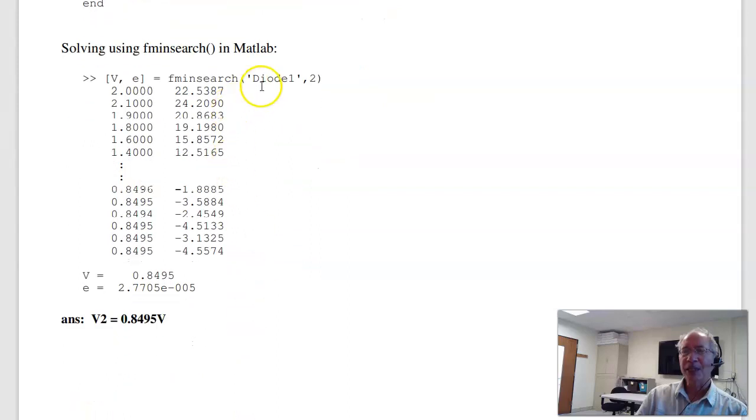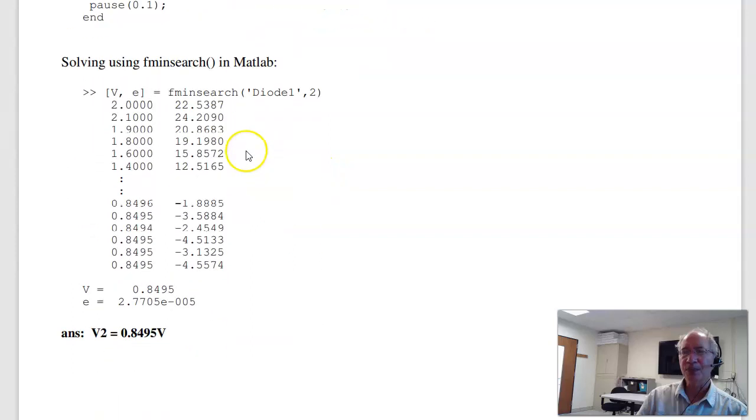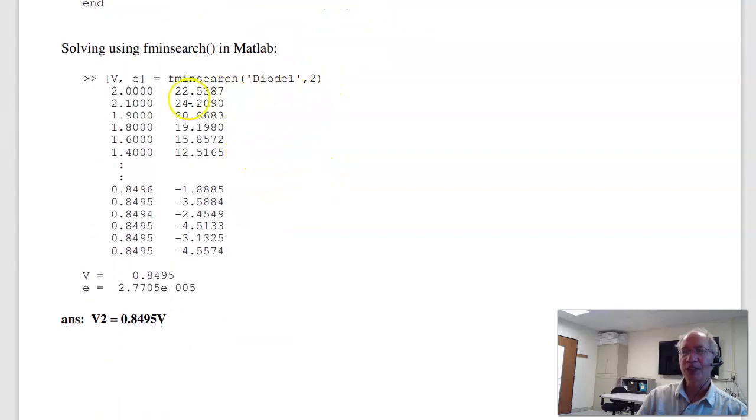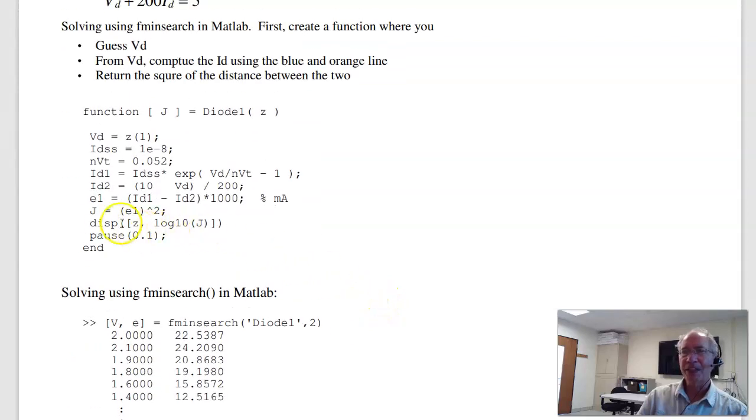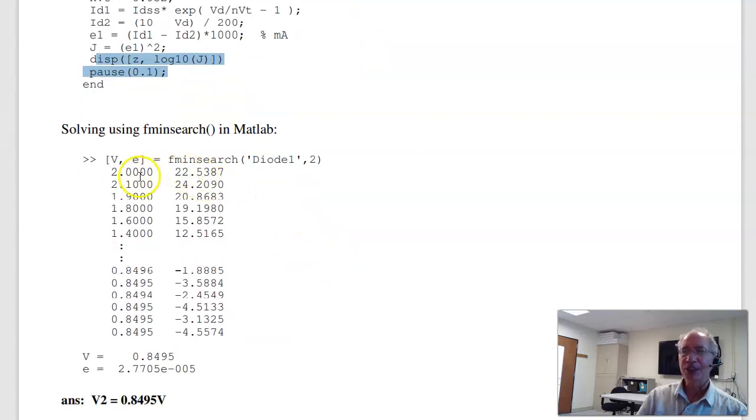In MATLAB, I can now call it, call the subroutine diode 1. Again, this is a subroutine called diode 1.m. My initial guess was 2 volts, and it's going to sit there and guess, guess again, guess again, guess again. And eventually it says the voltage is 0.8495 volts. And this last part right here, the display and pause, is kind of fun to watch. It really slows it down. But you can sit there and see, here's my guess, there's the log 10 of the error, 10 to the 22nd. Eventually the error becomes 10 to the minus 4. There's the final answer.